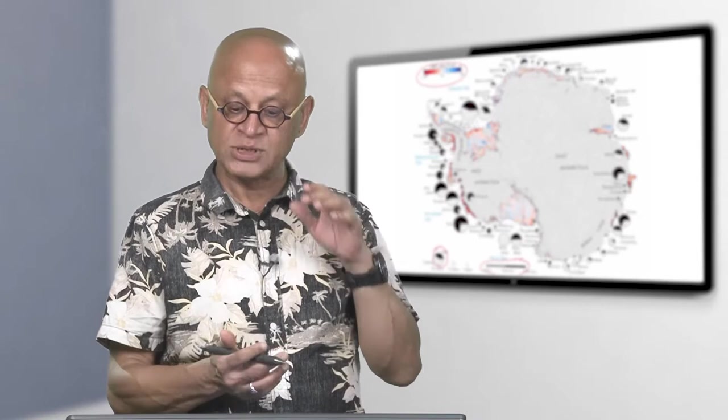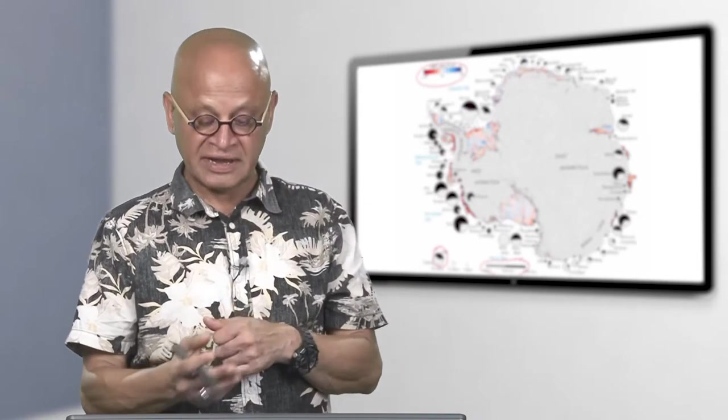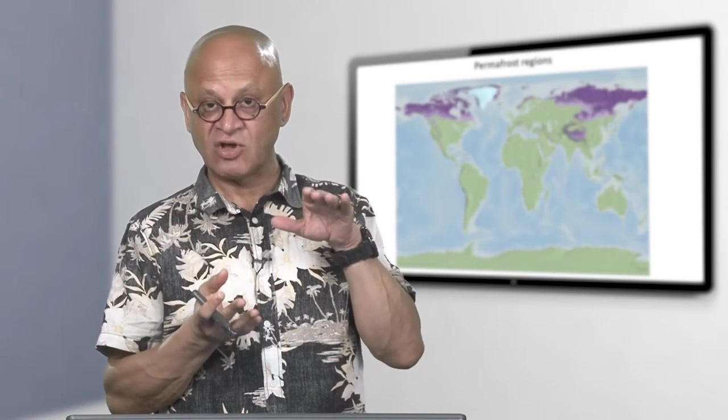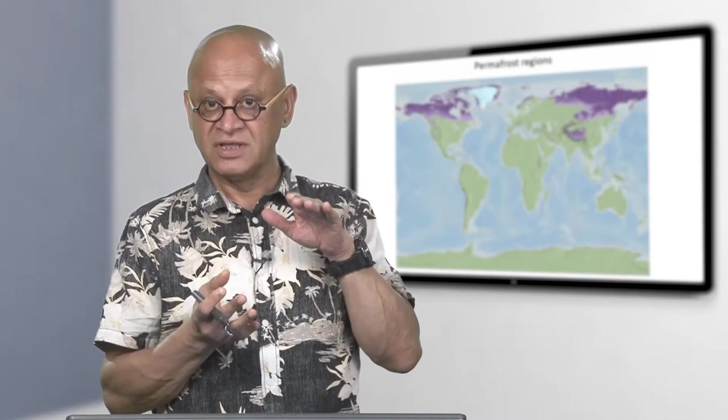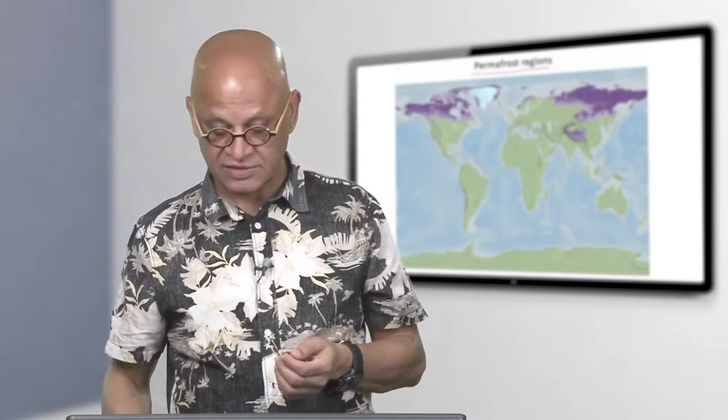Every time we think about large glaciers like Greenland and Antarctica, we also have to remember the equivalent sea level elevation, sea level rise that is locked up in those glaciers. That is something like 60 feet for Greenland and I think it is more than 120 feet for Antarctica.